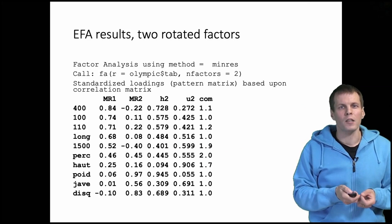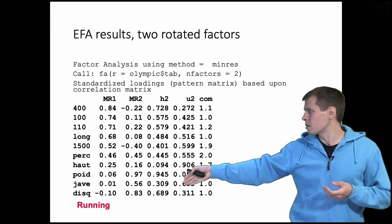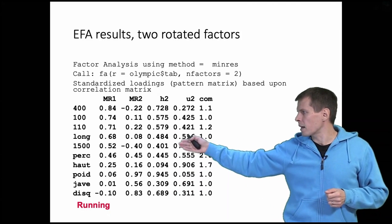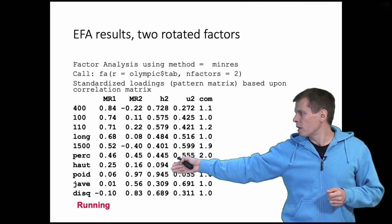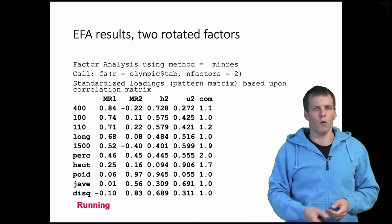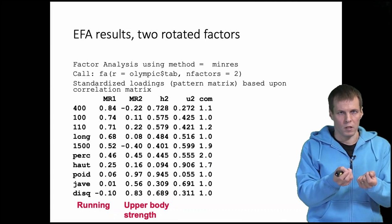This first factor we could label as running speed or running because that is what these items that load on it are about. Then the second factor, we have shot put, javelin throw, discus throw, and pole vault that load on that. We could say that is upper body strength. All the throwing sports are there.